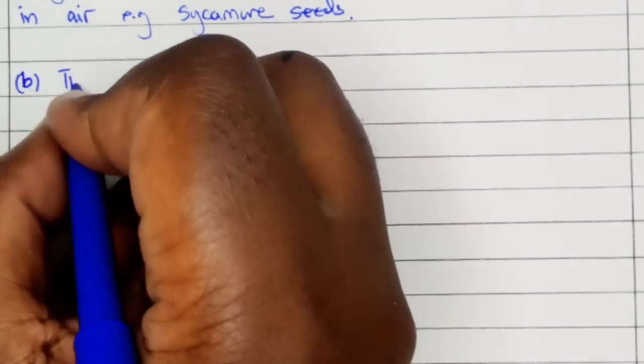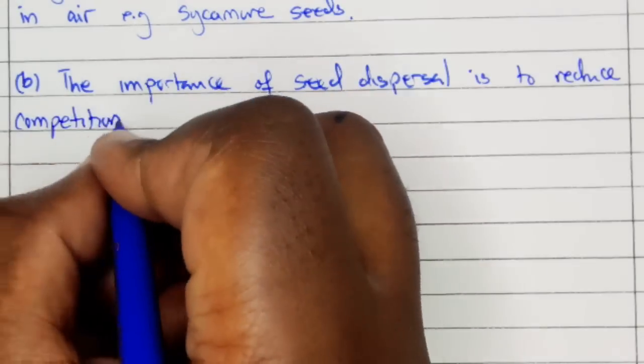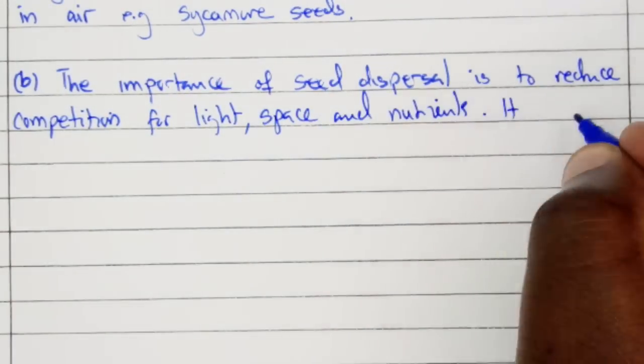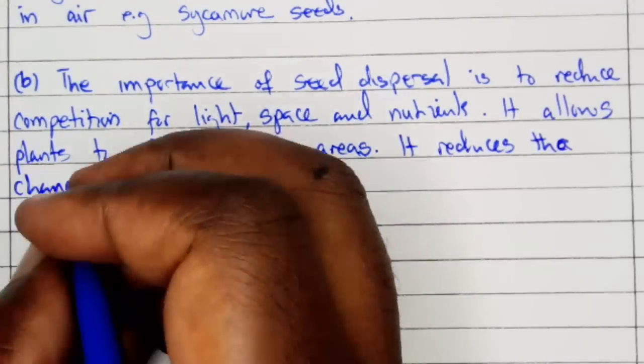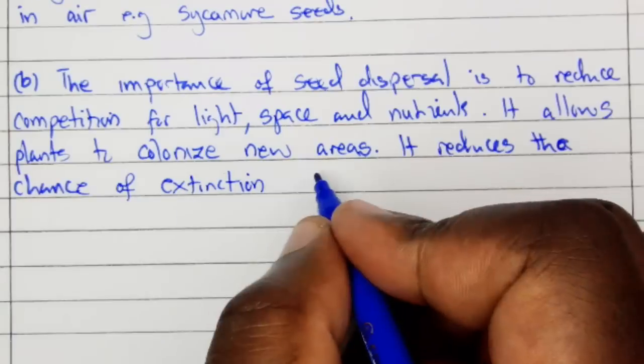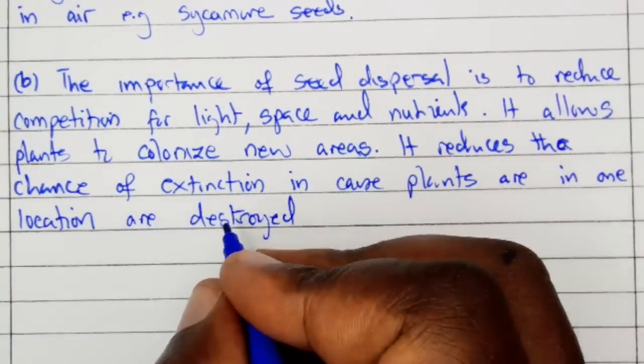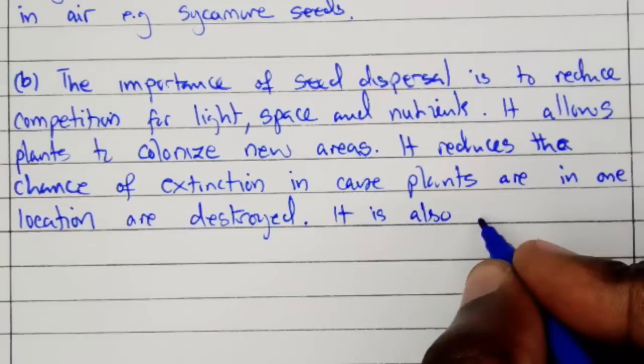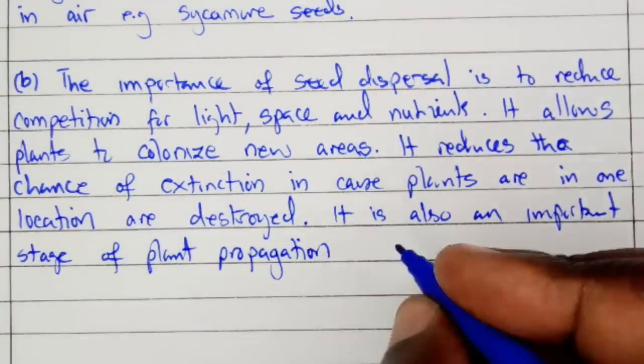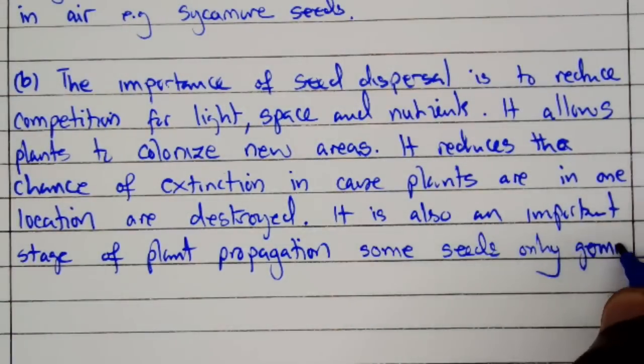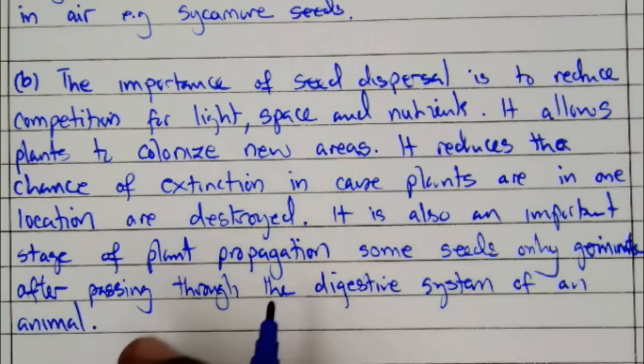Part B: The importance of seed dispersal is to reduce the competition for light, space, and nutrients. It allows plants to colonize new areas. It reduces the chances of extinction in case plants in one area are destroyed. It is also an important stage for plant propagation. Some seeds only germinate after passing through the digestive system of some animals. These were the solutions to question number 8.